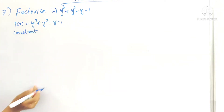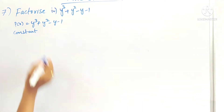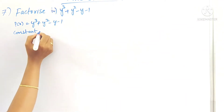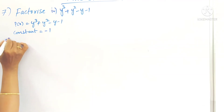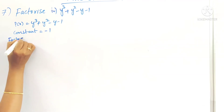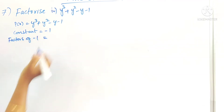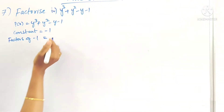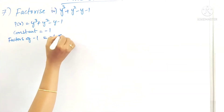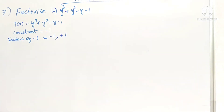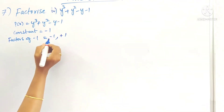We have already seen three problems. In the description I am giving the link to those three problems, please watch them. The constant term is -1. So write the factors of -1. The factors of 1 are 1 only, so the factors of -1 are +1 and -1.